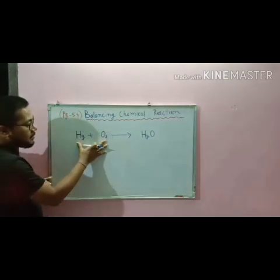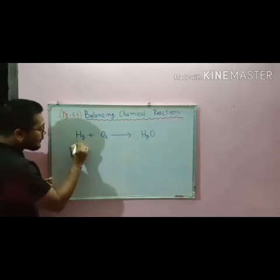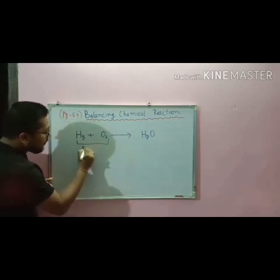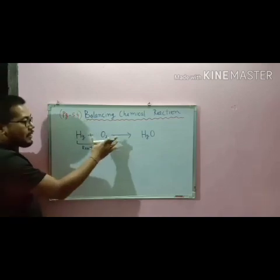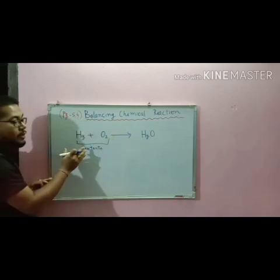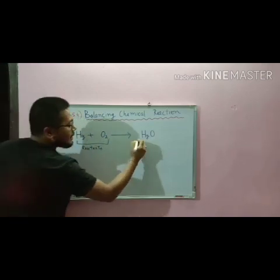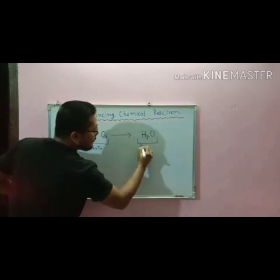The part that is before the arrow is known as reactants, and the part that is after the arrow is known as product.